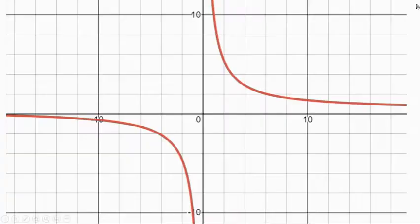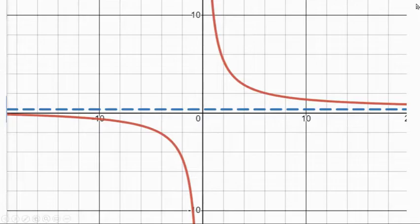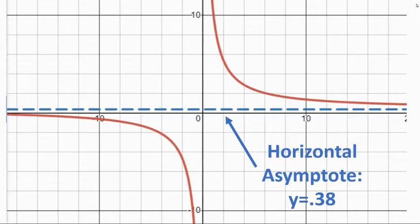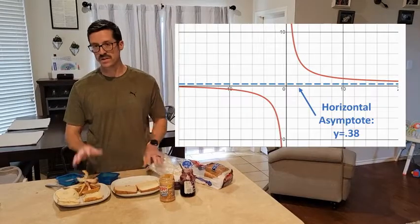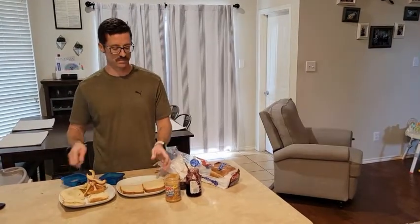So the cost per sandwich is going to approach 38 cents each, but it will never quite get there. So that 0.38, that's our horizontal asymptote. Our function is going to get infinitely close to that value, but it's never quite going to reach it.